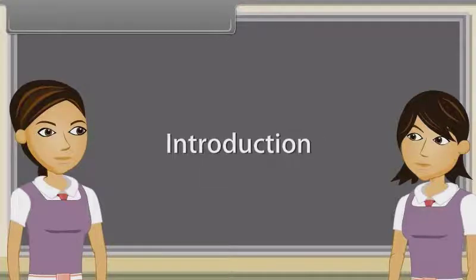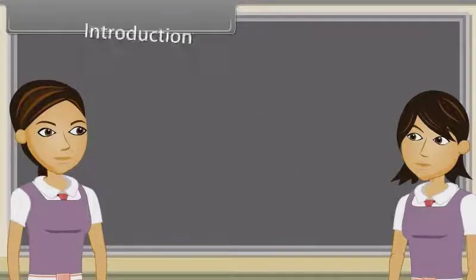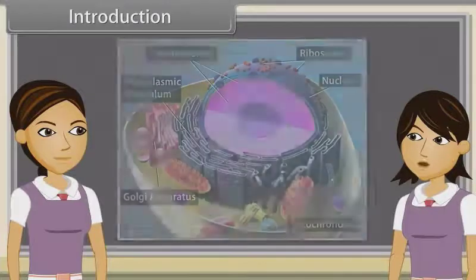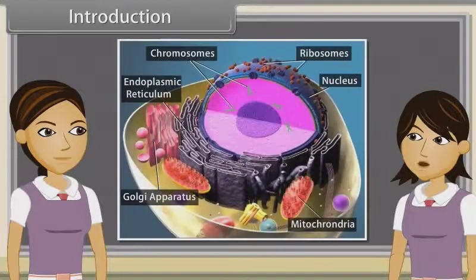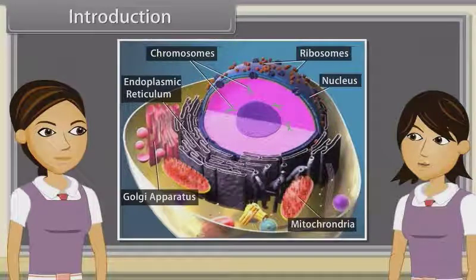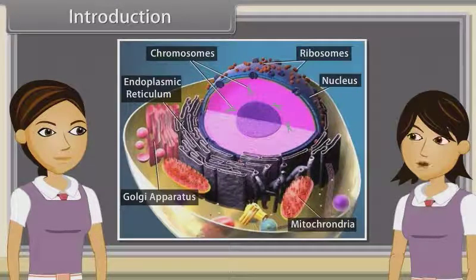Hey Ankita, we have discussed the structure of the endomembrane system, endoplasmic reticulum, Golgi apparatus, lysosomes, vacuoles, mitochondria, plastids and ribosomes.